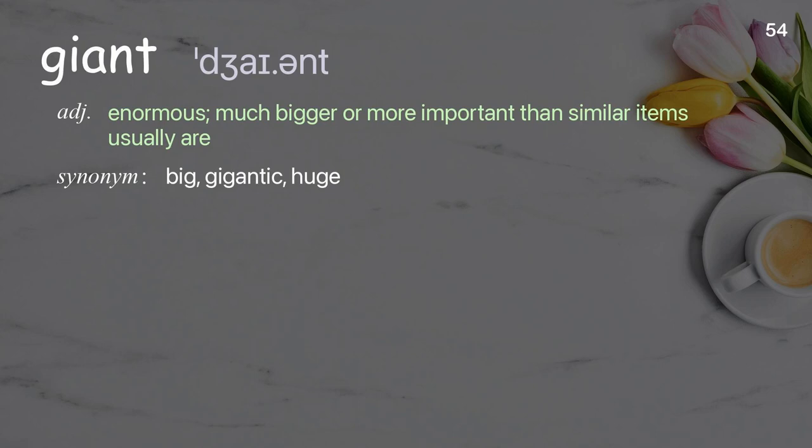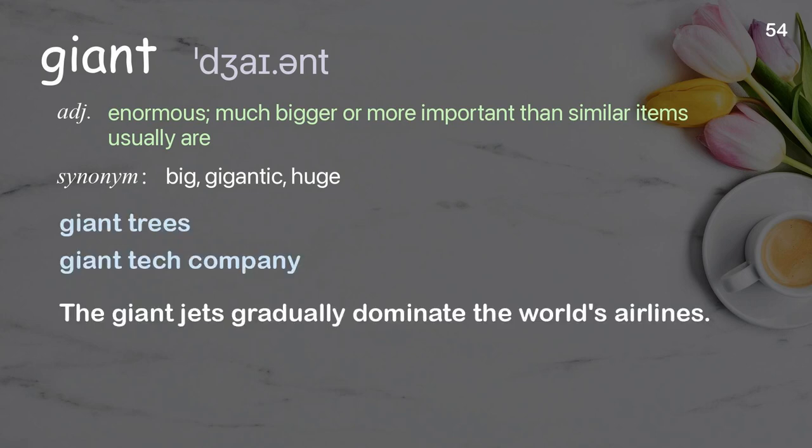Giant: extremely big, much bigger or more important than similar items usually are. Examples: giant trees, giant tech company. The giant jets that gradually dominate the world's airlines.